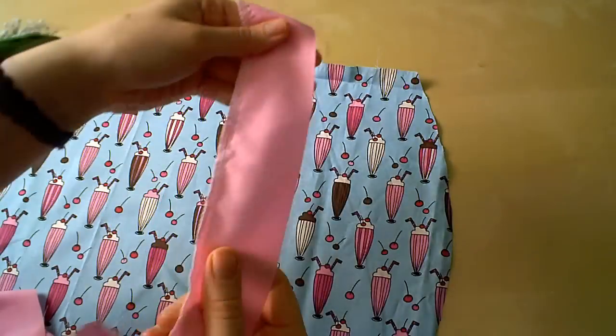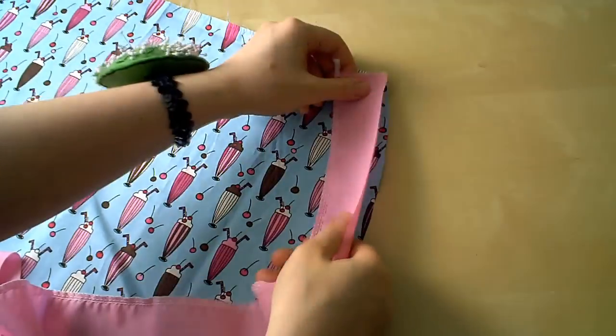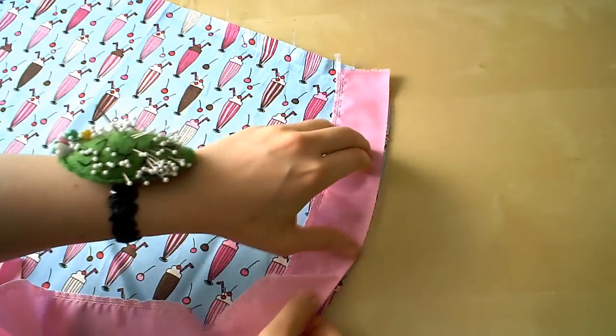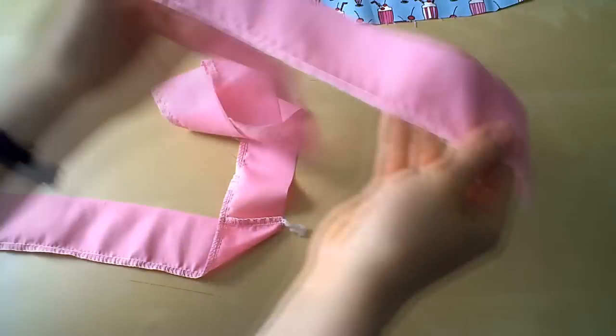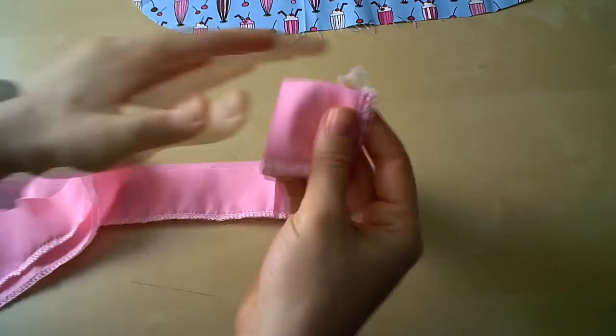Now, we're going to attach the ruffle trim to our apron. If you have pre-ruffled trim, you're going to pin it right sides together around the curved edge of the apron. If you want to make your own ruffle trim, here's my crash course in my favorite cheater method for making ruffles.